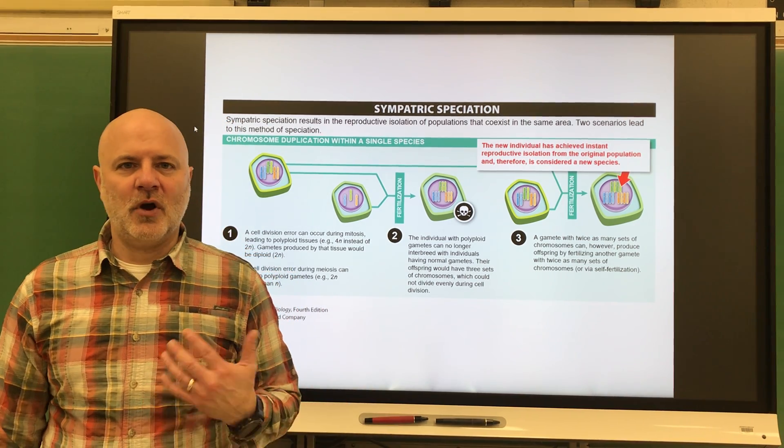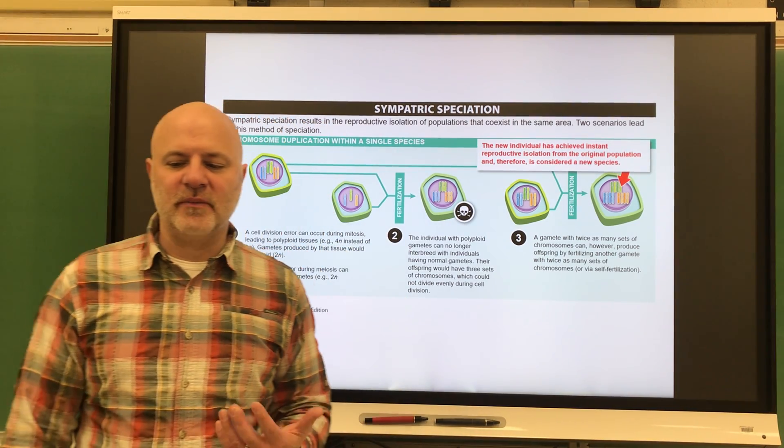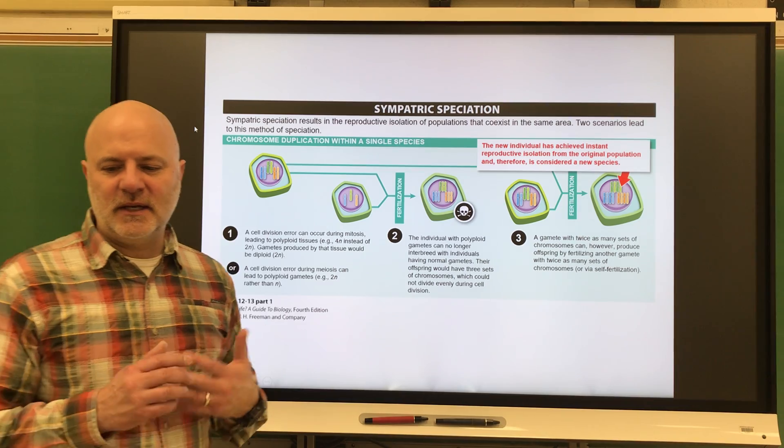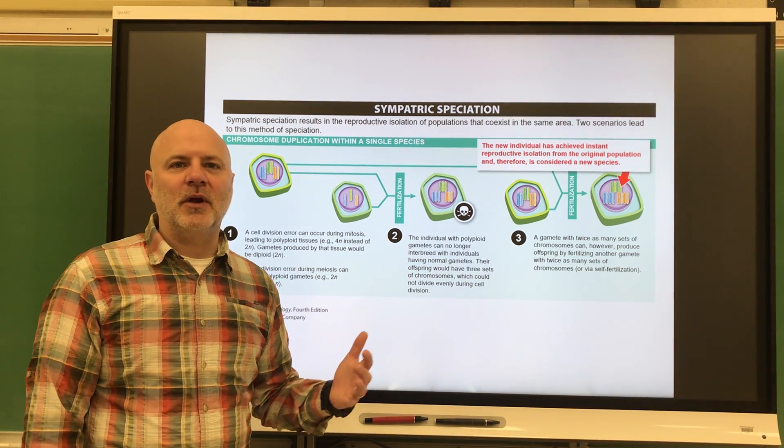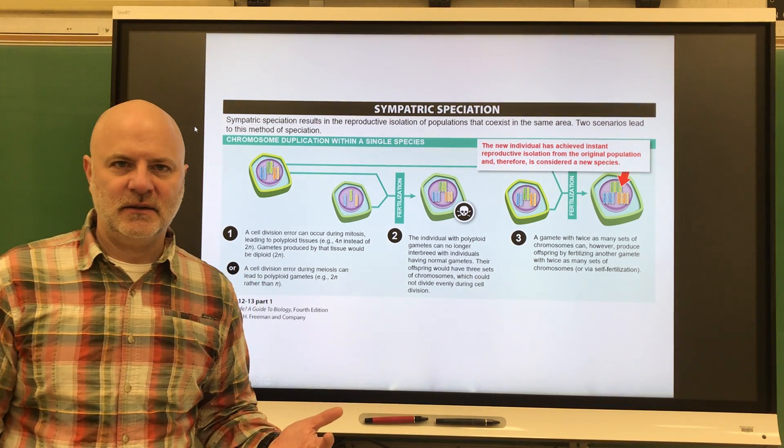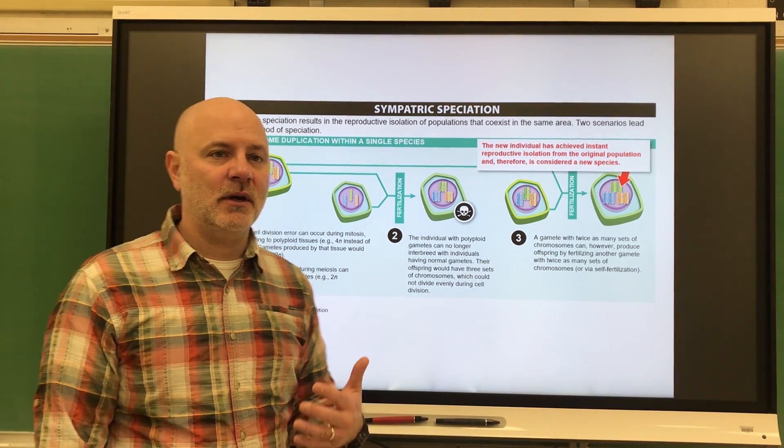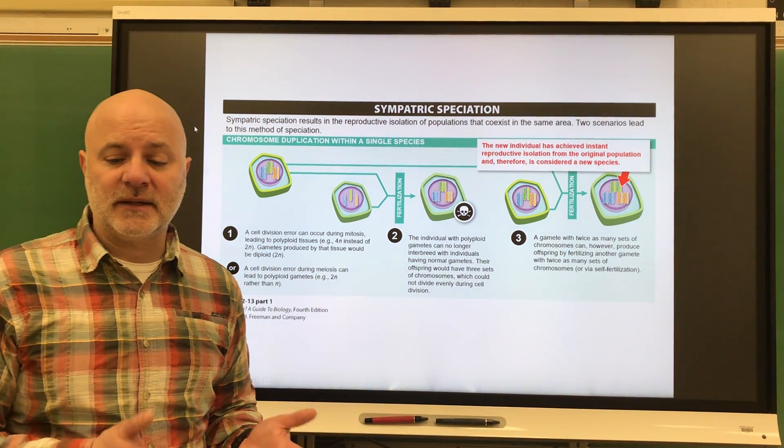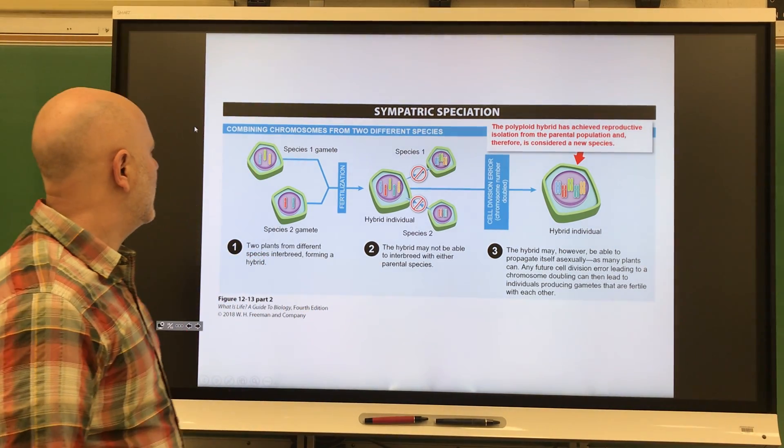This is what we see with autopolyploidy, where all sets of chromosomes are from the same species. What this does is it essentially creates a new species that then can't backbreed with its parental species. Almost in one generation here, we have a new species. As I mentioned, 30 percent of all flowering plants are polyploids of some sort.